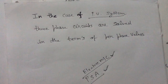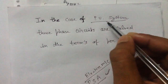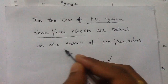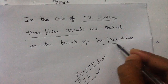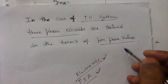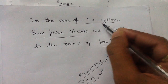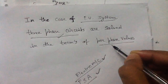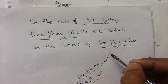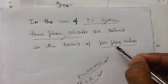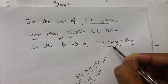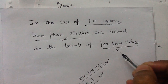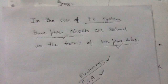In the case of the per unit system, three-phase circuits are solved in terms of per phase values. In the per unit system, three-phase circuits are solved on a per phase basis — they are solved in terms of per phase values. What does that mean? Let me tell you.